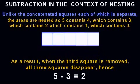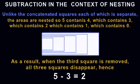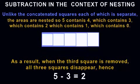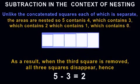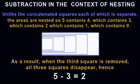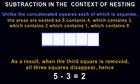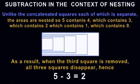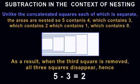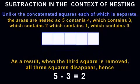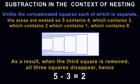Unlike the concatenated squares, each of which is separate, the areas in this example are nested. Five contains four, which contains three, which contains two, which contains one, which contains zero. As a result, when the third square is removed, all three squares disappear. Hence, five minus three equals two.